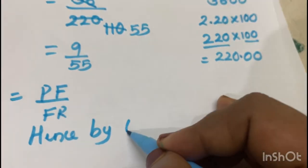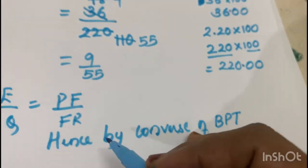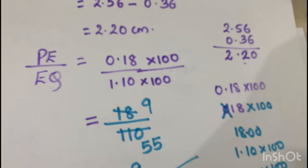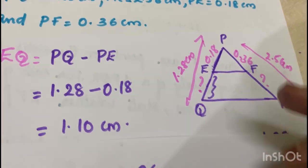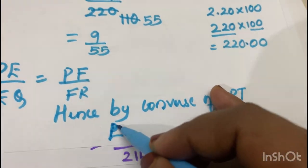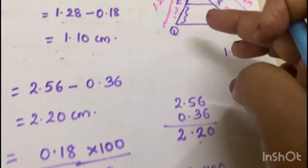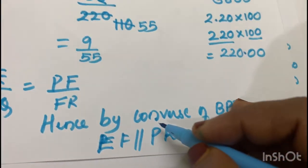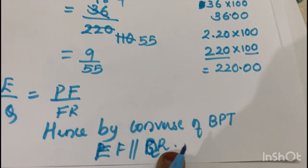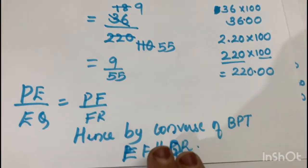PE by EQ is equal to PF by FR. So hence by Converse of BPT, EF is parallel to QR. This is our conclusion.